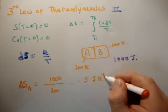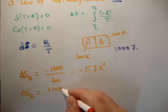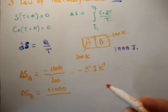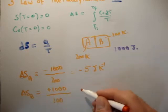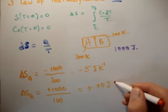Now, if you look at the change in entropy for system B, we're going to have plus 1,000 joules this time, and we're going to have a temperature of 100 Kelvin, giving us plus 10 joules per Kelvin.